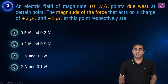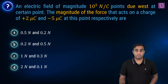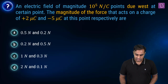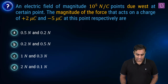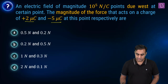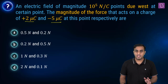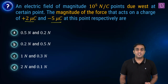Next, we have a question based on the electric field vector. We are considering a point where the electric field magnitude is given as 10 to the power five newtons per coulomb, directed due west. We are placing two charges at that point in two separate cases: one is plus two microcoulombs, the other is minus five microcoulombs. In each case, we must find the magnitude and direction of the force acting on each charge.